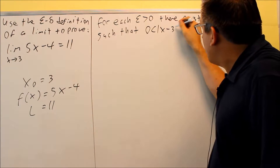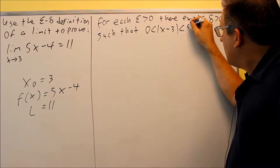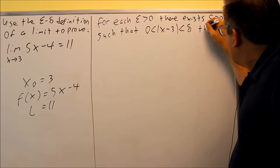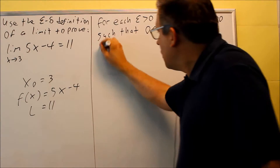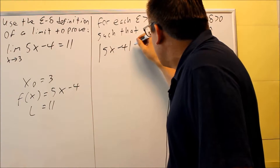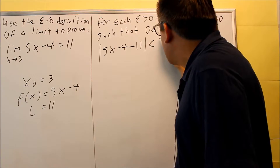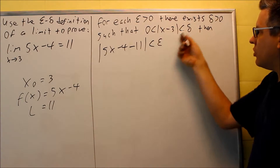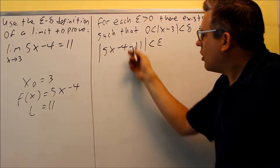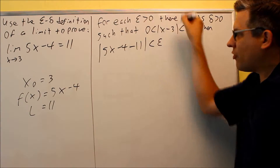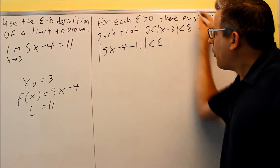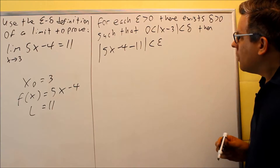Our x₀ is given as 3, so we write the absolute value of x minus 3 is less than delta. Then the other statement is the absolute value of f(x) minus L is less than epsilon. f(x) is 5x minus 4, so inside we put 5x minus 4 minus 11, less than epsilon. This says the difference in the x direction is less than delta, and the difference between our function and the limit is less than epsilon. This is always the first statement you start with for these kinds of problems.